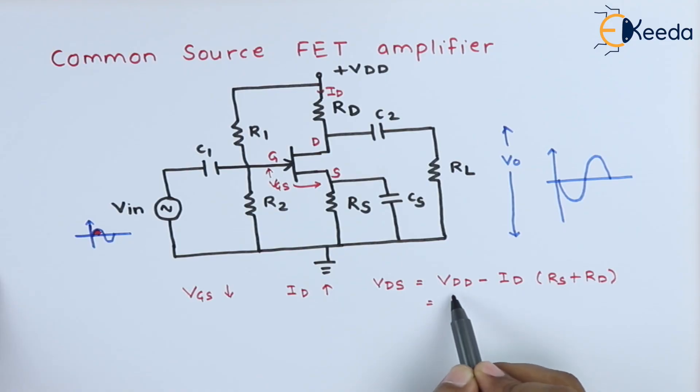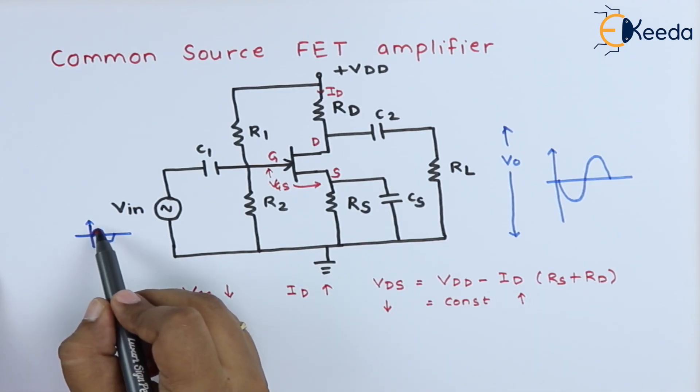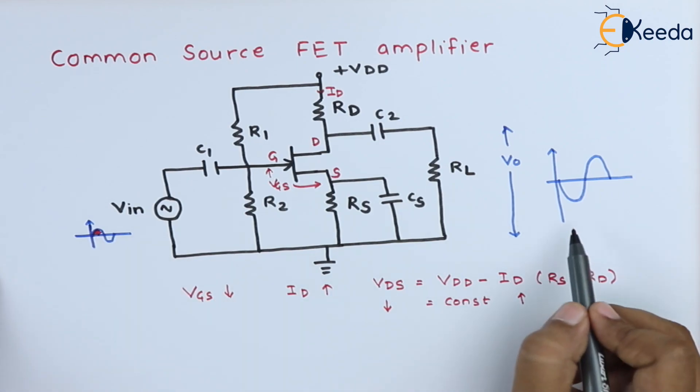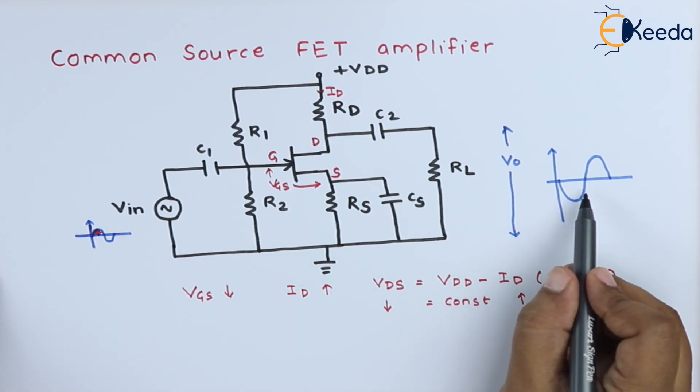As we know, the supply voltage is always constant, and the current ID increases. Because of that, the VDS voltage decreases. That means for the positive half cycle of the input signal, we will get the amplified negative half at the output.